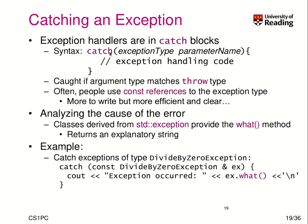How do we catch an exception? We use catch blocks. In a catch block, we specify the exception type and give it a parameter name, then put inside the block the code to handle the exception. This code is only triggered if the argument type matches the throw type. People often use const references in the exception type for efficiency and clarity. For example, we try to catch a divide_by_zero exception into variable x, then print a message using x.what() — a function provided by the exception class that returns an explanatory string indicating the reason for the error.